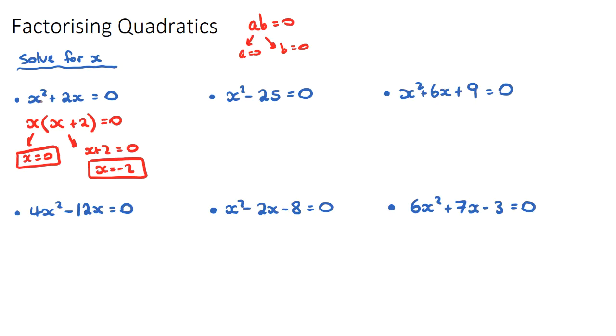And we can just quickly check that, because if we look at our original equation, if x was 0, 0 squared is 0, plus 2 times 0 is 0, and 0 does equal 0. So we balance the equation. And if x were to equal negative 2, negative 2 squared is 4, plus 2 times negative 2 would be negative 4, which would also give us 0.